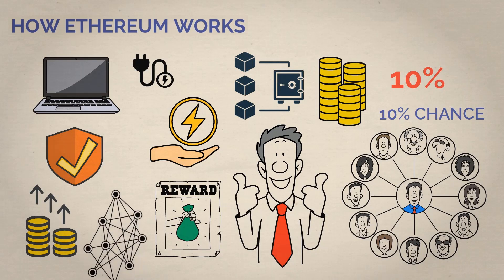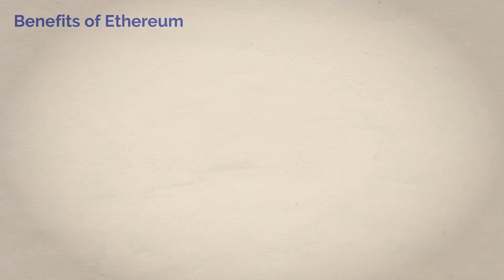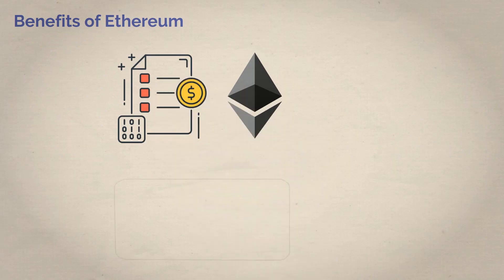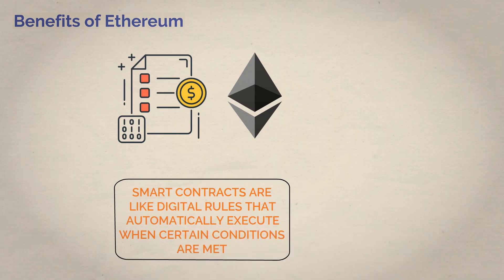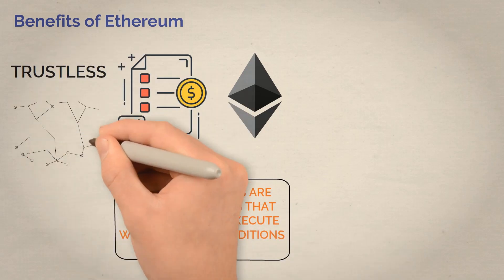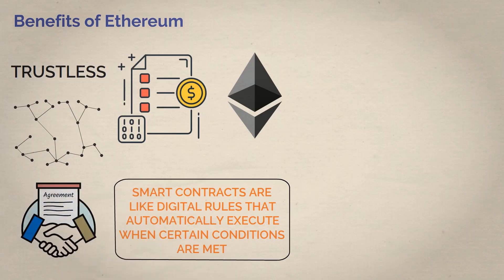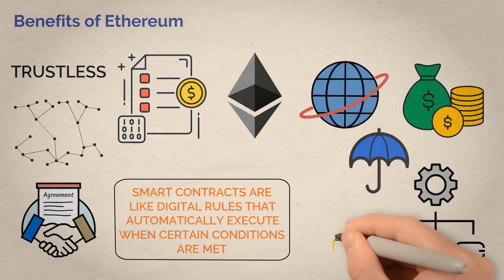No doubt, the Ethereum network is incredibly sophisticated and perfectly planned. But what are the benefits of Ethereum? Ethereum is pretty awesome for many reasons. One of the big ones is smart contracts. As I stated earlier, smart contracts are like digital rules that automatically execute when certain conditions are met. This allows for trustless, decentralized and automated execution of an agreement. Think about it. Smart contracts open up a whole new world of possibilities for various industries, from finance and insurance to supply chain management and voting.